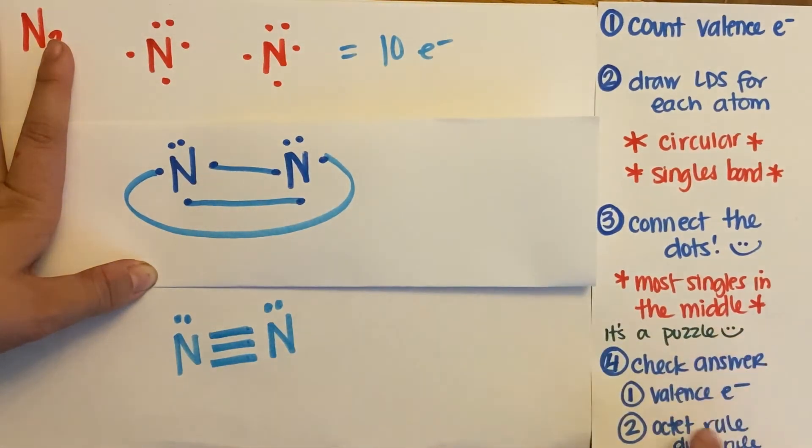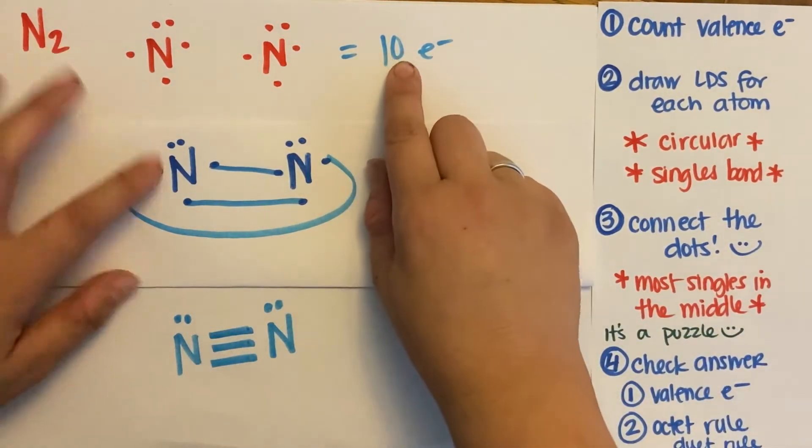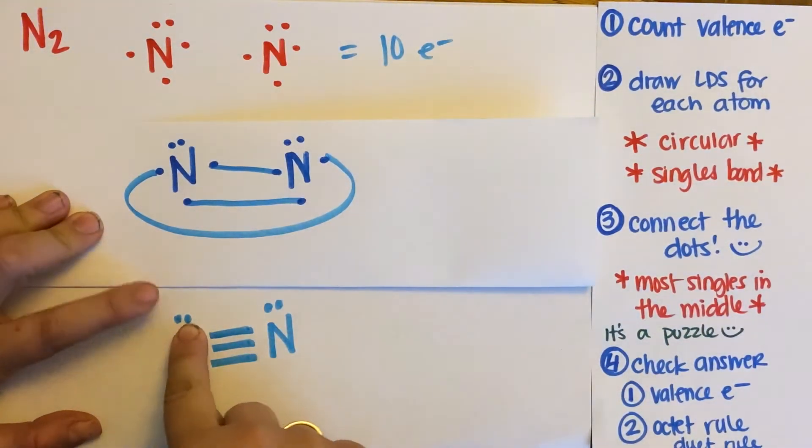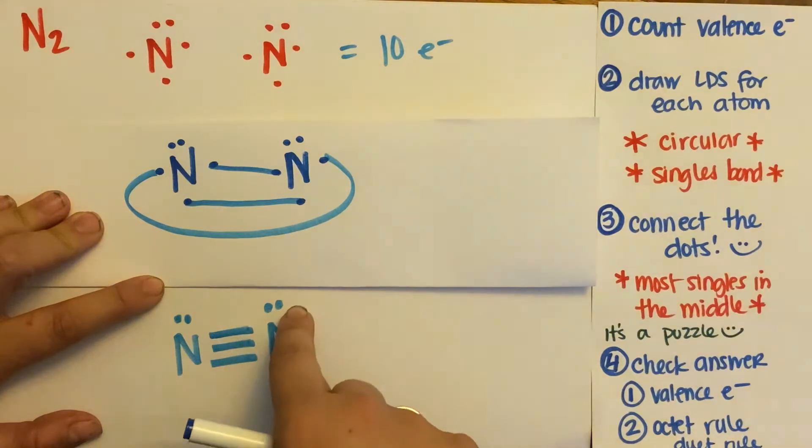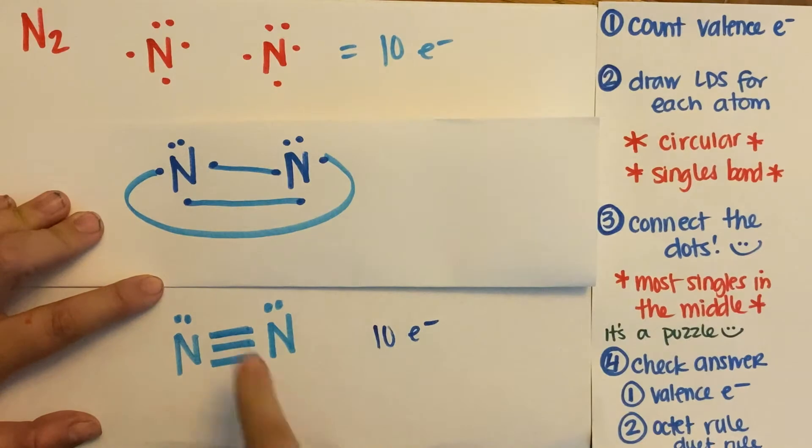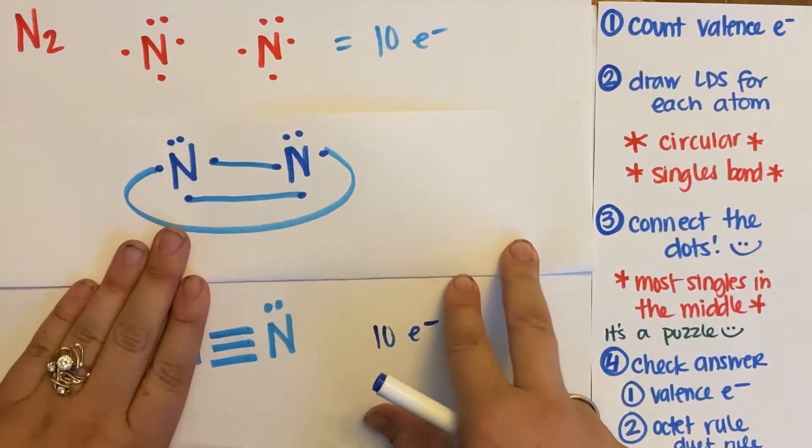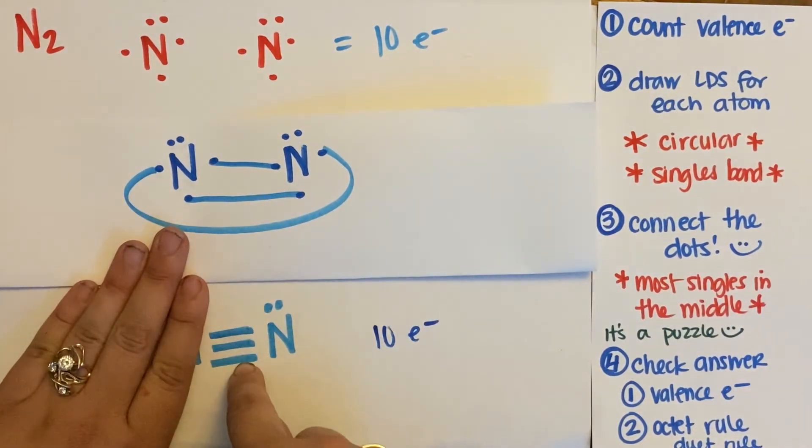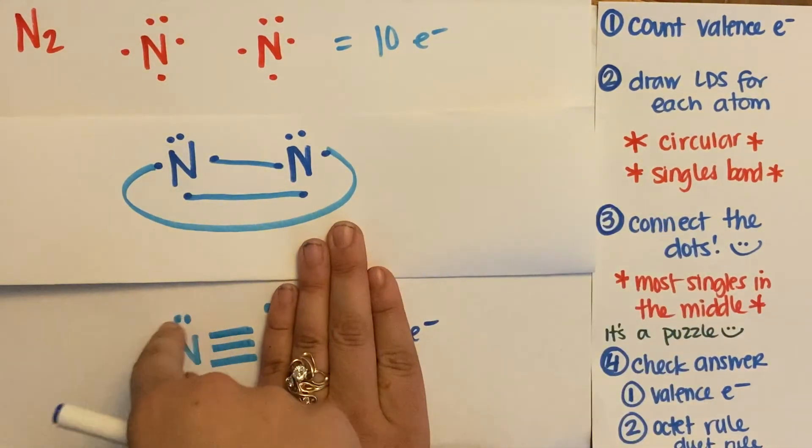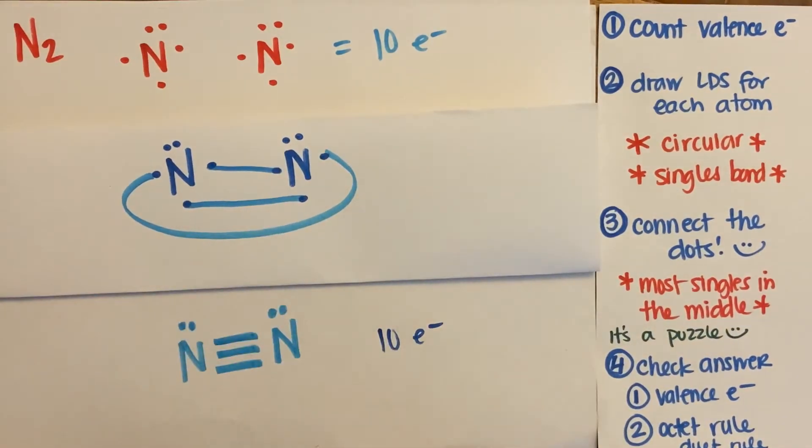And now we just check our answer. So I started with 10 electrons. Do I end with 10? Well, one, two, four, six, eight, nine, ten. So start of a 10, end of a 10. And then is the octet rule satisfied? Well, ignore this nitrogen. Two, four, six, seven, eight. Ignore that nitrogen. Two, four, six, seven, eight. So yes, octet rule is satisfied.